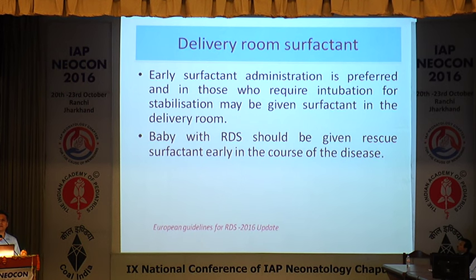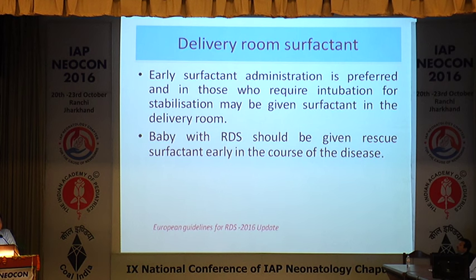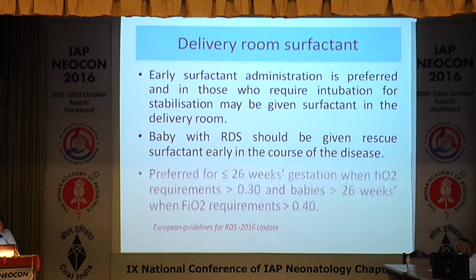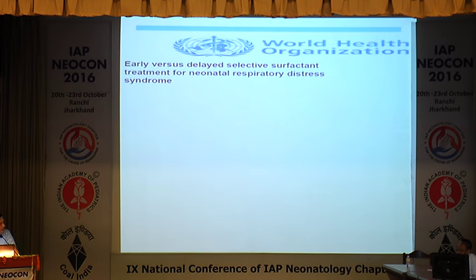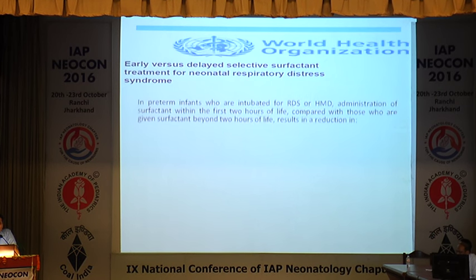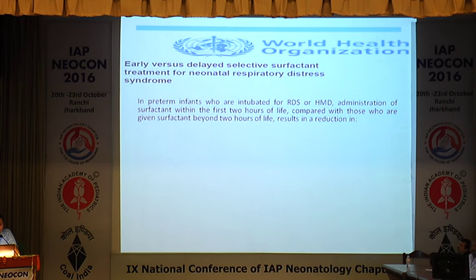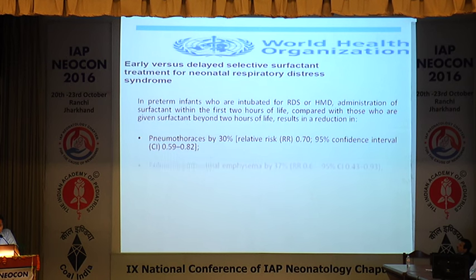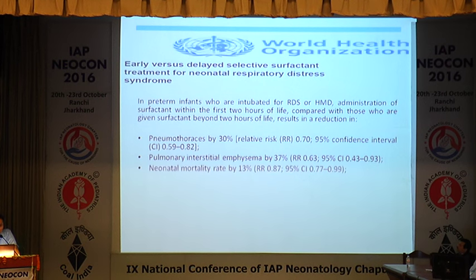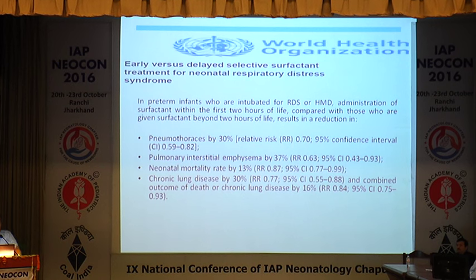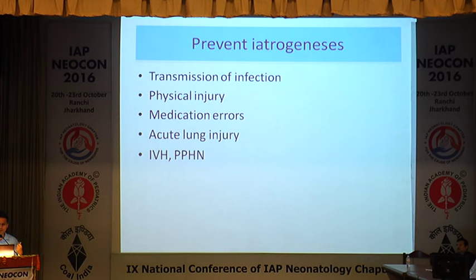Rescue surfactant therapy means giving surfactant to a baby with respiratory distress, while prophylactic surfactant therapy means giving surfactant to a baby before development of respiratory distress. Prophylactic surfactant therapy is now not recommended, because almost 30 to 40% of babies may not actually require surfactant if you only give CPAP. So if the baby has distress and requires CPAP and supplemental oxygen, then you give surfactant therapy. In preterm babies intubated for RDS or HMD, administration of surfactant within the first two hours of life compared to beyond two hours results in reduced pneumothorax by 30%, reduced PIE by 37%, decreased neonatal mortality by 38%, and chronic lung disease by 30%. So early surfactant therapy reduces many complications.